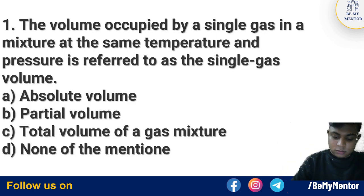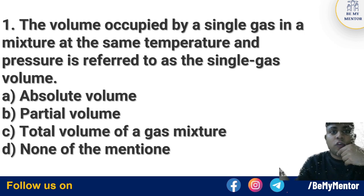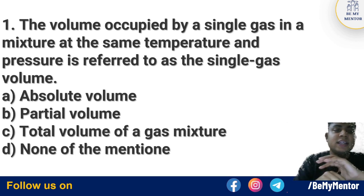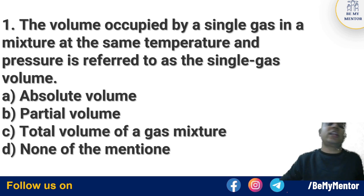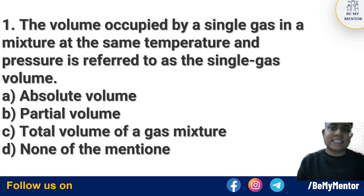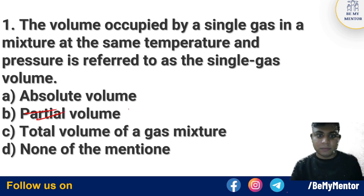Question number 1 says: Volume occupied by a single gas in a mixture at the same temperature and pressure is preferred to be as a single gas volume. In any mixture, if we ask what is the pressure of a particular gas — that is the partial pressure of the gas. If we ask about gas X or gas Y, the pressure of X gas is the partial pressure of X. Option number B is the correct answer — partial pressure.